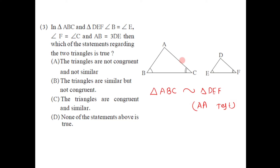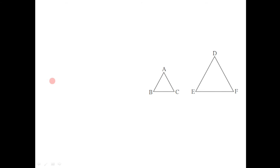These two triangles are similar. Now we have to decide whether they are congruent or not. As seen from the diagrams they are not the same size, so these two triangles are not congruent. Therefore the correct alternative is B — the triangles are similar but not congruent.